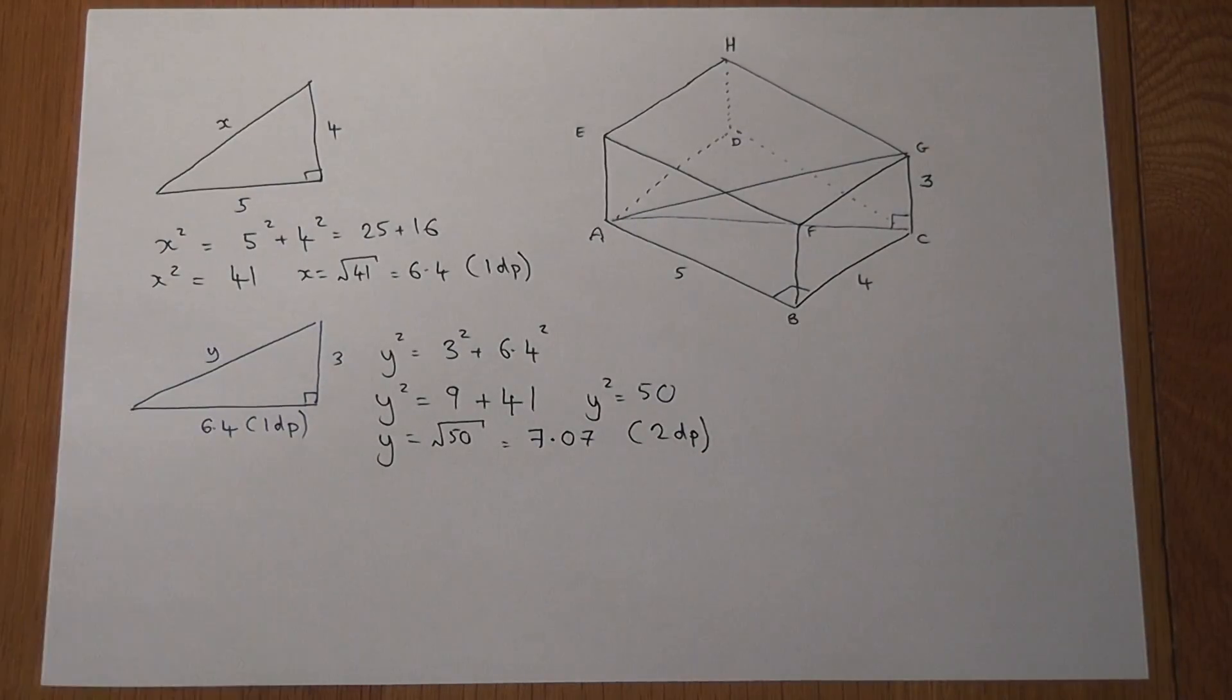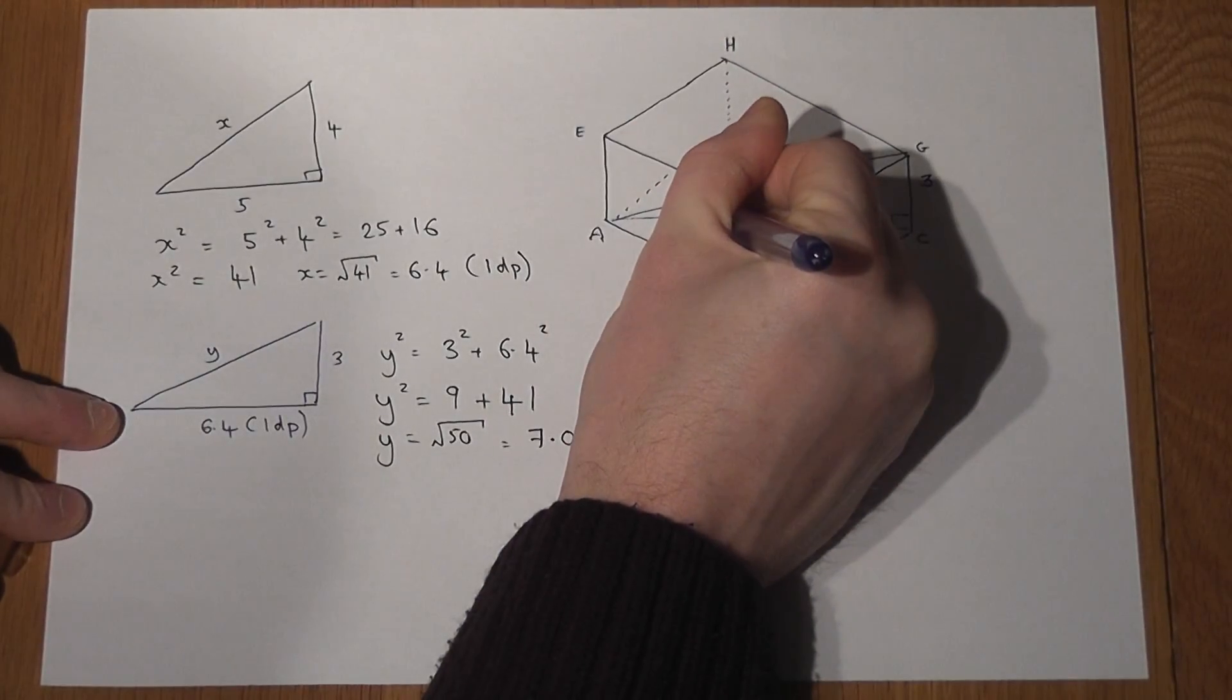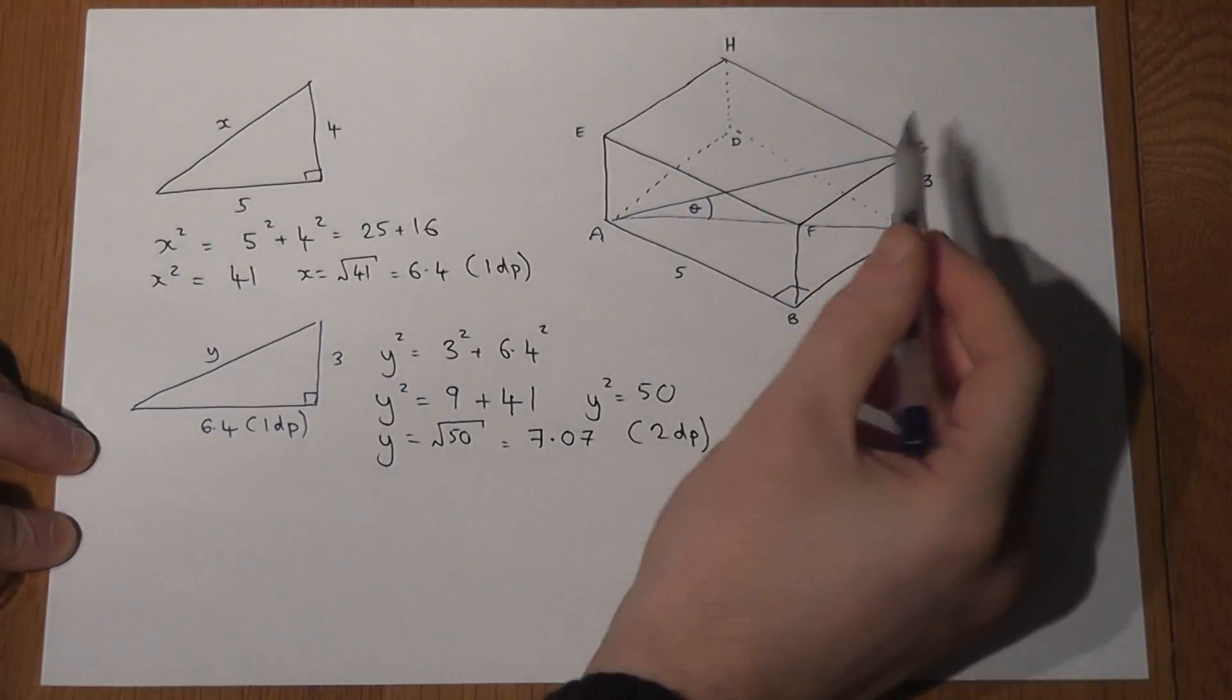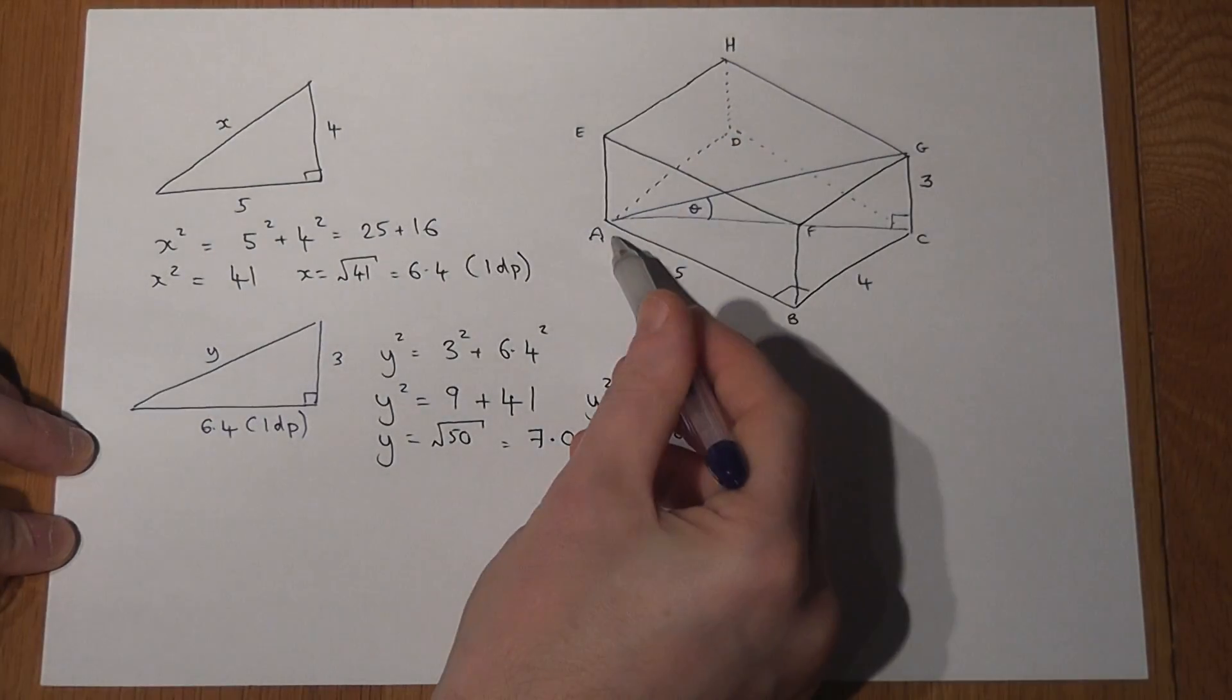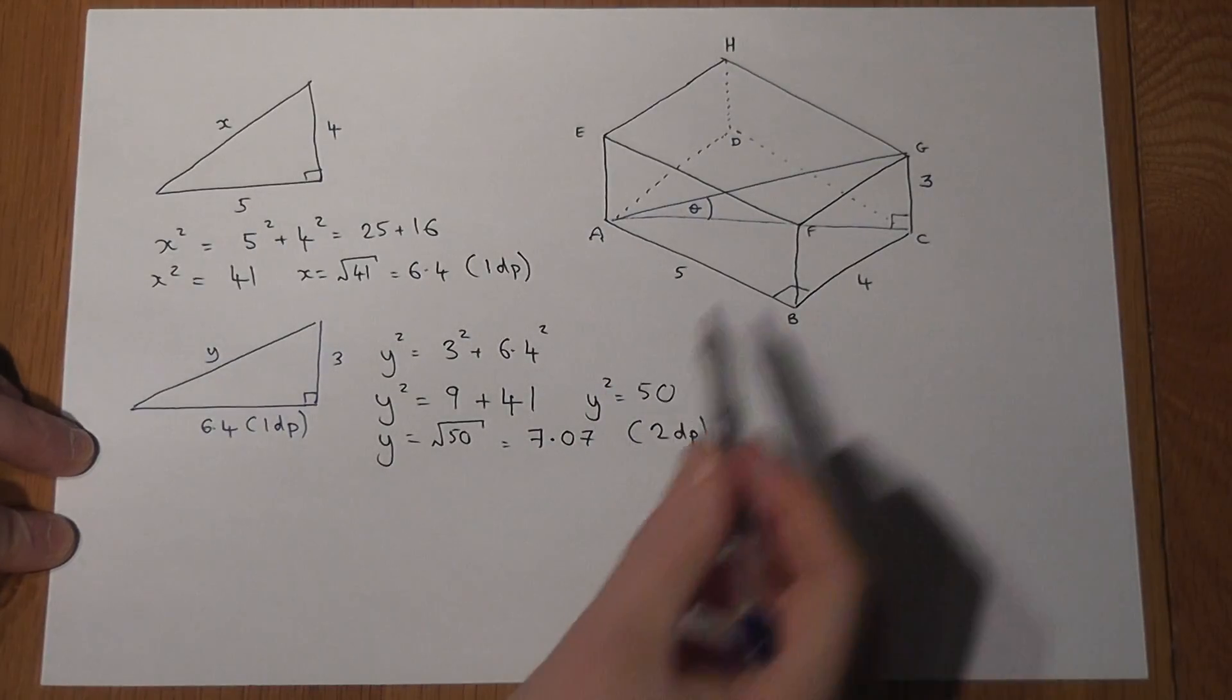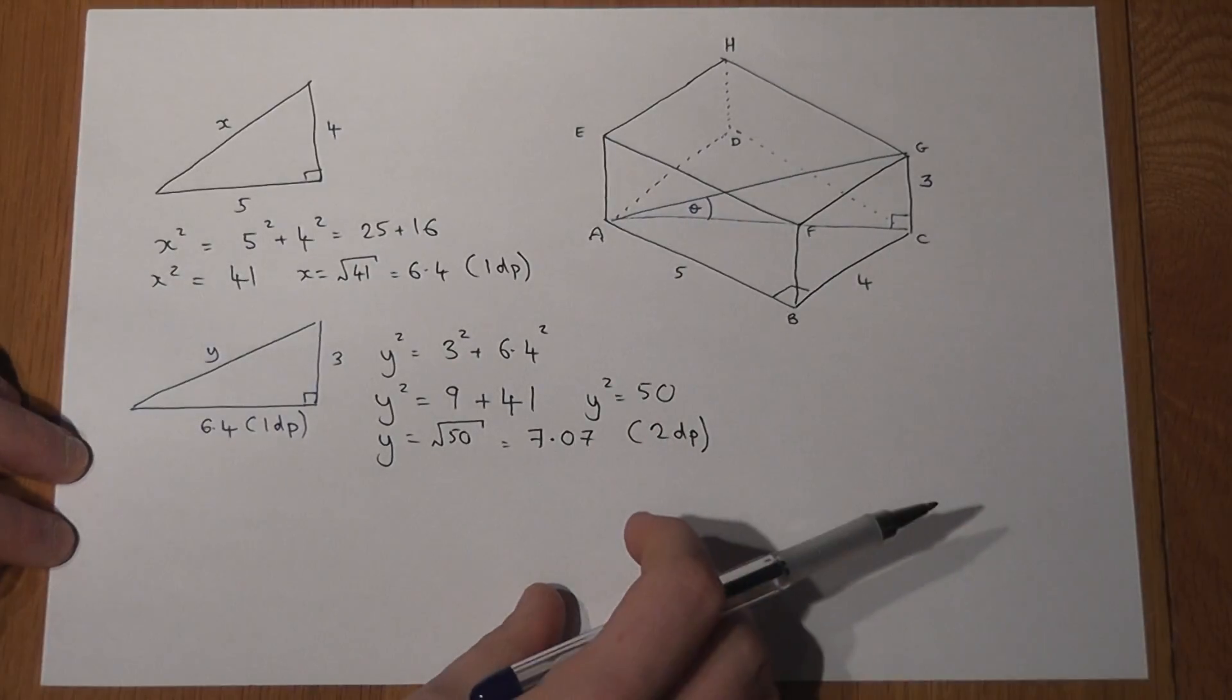Now the final calculation in this video is to find the angle here, which I'm going to call theta. And it's the angle which the line AG makes with the horizontal. So the angle AG makes with the horizontal is given by this angle here, theta.